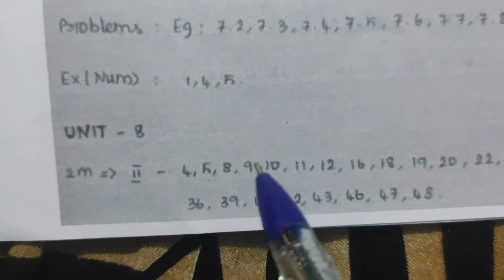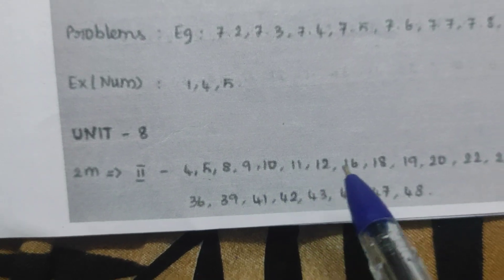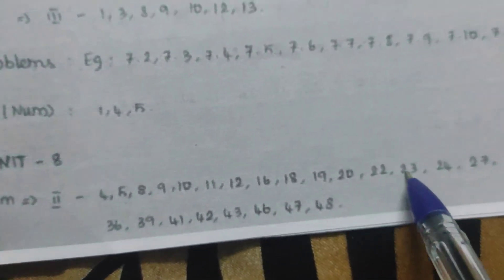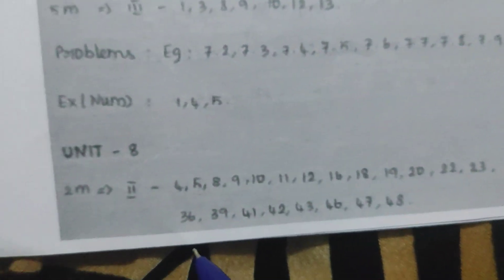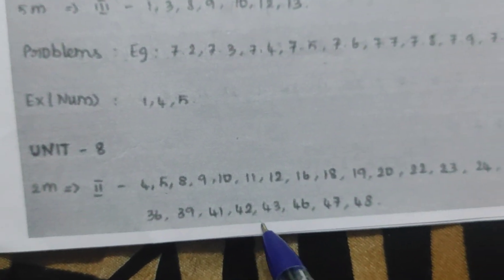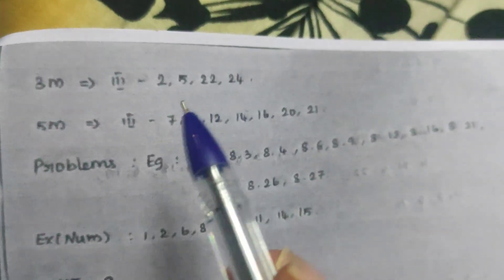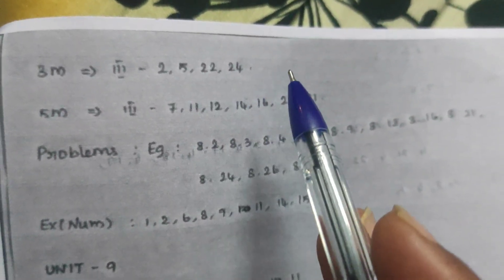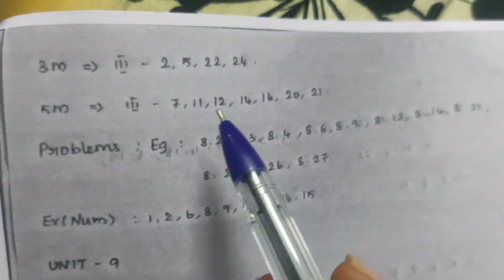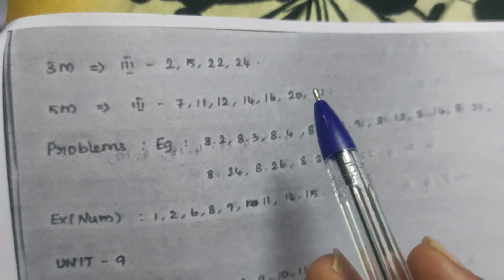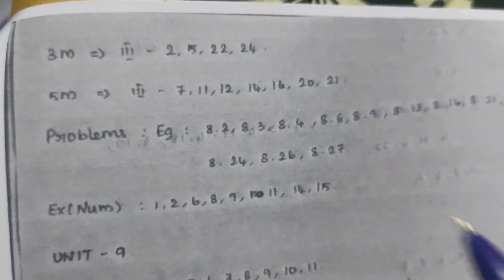Unit 8: 2-mark questions — 4, 5, 8, 9, 10, 11, 12, 16, 18, 19, 20, 22, 24, 27, 29, 35, 36, 39, 41, 42, 43, 46, 47, 48. Exercise: 1, 4, 5, 8, 9, 10. 5-mark: 2, 5, 22, 24. 3-mark questions — 7, 11, 12, 14, 16, 20, 21.